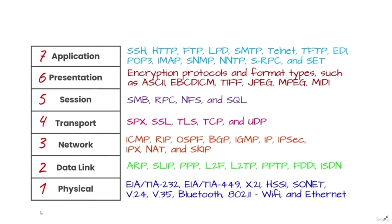The physical layer is the lowest layer of the OSI model. It is concerned with electrically and optically transmitting raw and structured data bits across the network from the physical layer of the sending device to the physical layer of the receiving device. It can include specifications such as voltages, pin layout, cabling, and radio frequencies. At the physical layer, one might find physical resources such as network hubs, cabling, repeaters, network adapters, or modems.